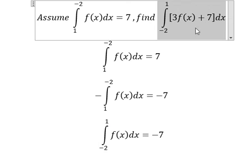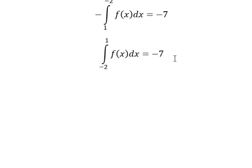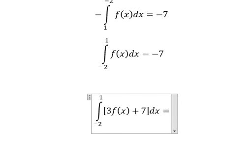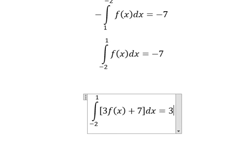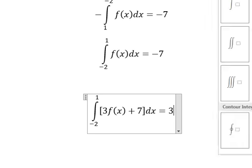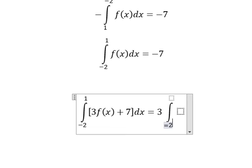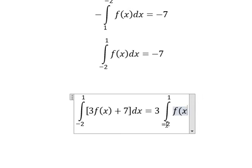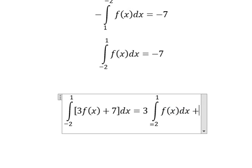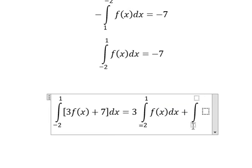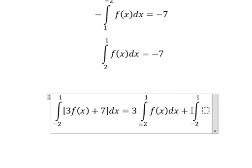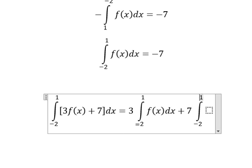Now we have this one here. We put 3 outside, and we have the integration from negative 2 to positive 1 of f(x) dx, plus the integration from negative 2 to positive 1 of 7 dx.